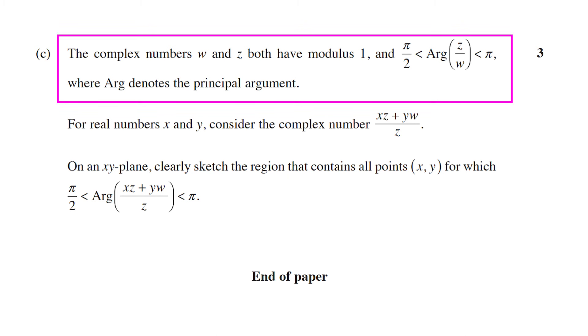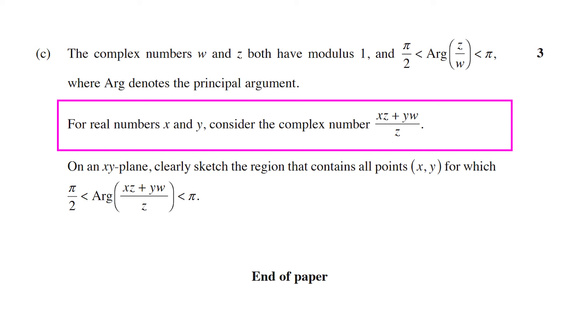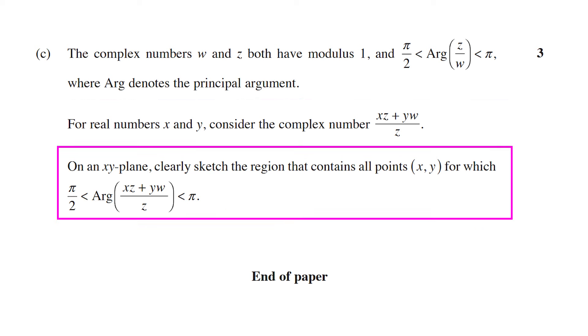Alright, let's get into it. So the complex numbers W and Z both have modulus 1, and arg of Z over W is between π/2 and π, where arg denotes the principal argument. All pretty reasonable so far, but this is where it gets a bit wacky. For real numbers X and Y, consider the complex number (XZ + YW)/Z. On an XY plane clearly sketch the region that contains all points (X,Y) for which arg((XZ + YW)/Z) is between π/2 and π.